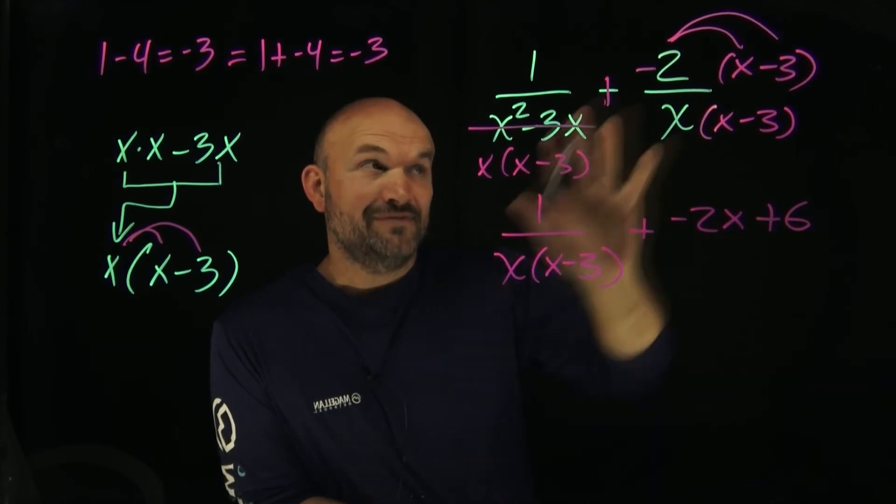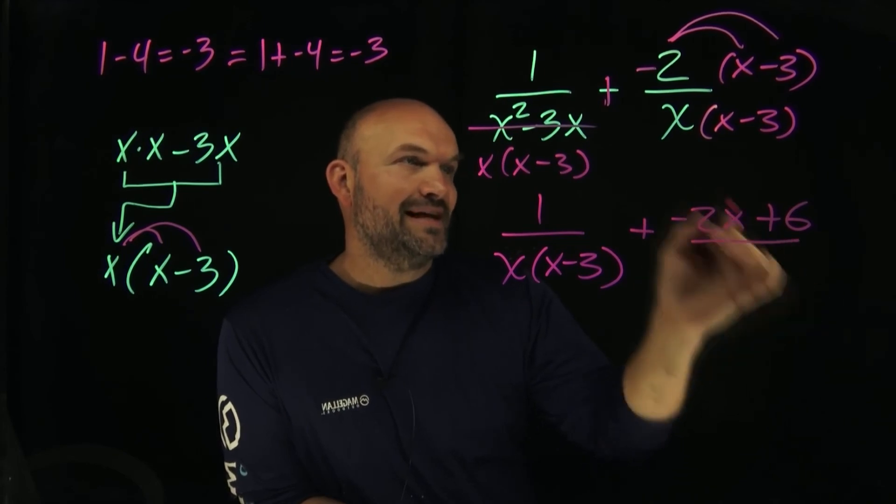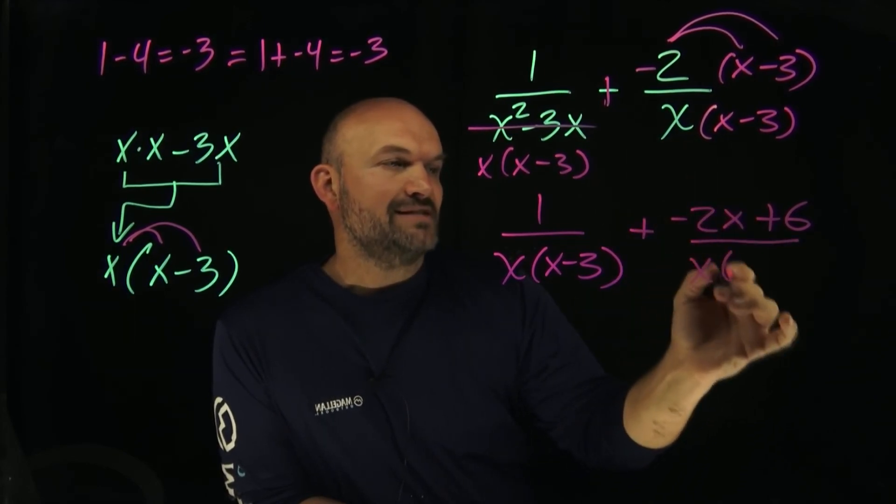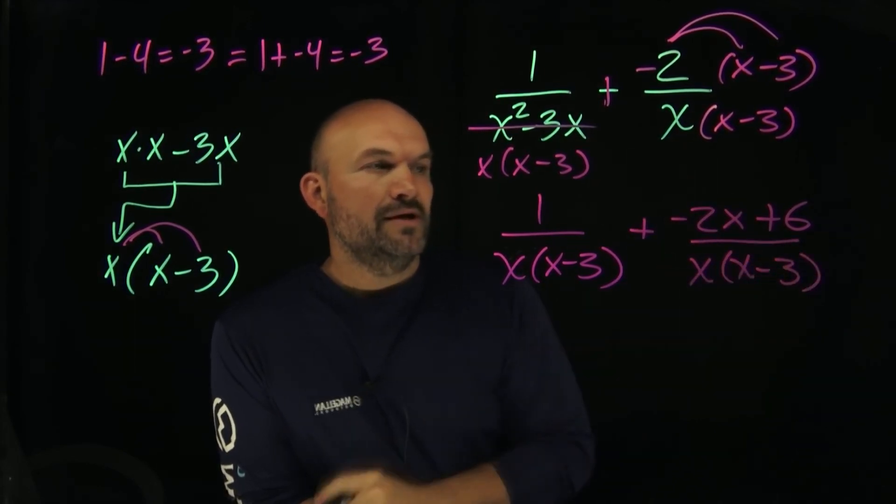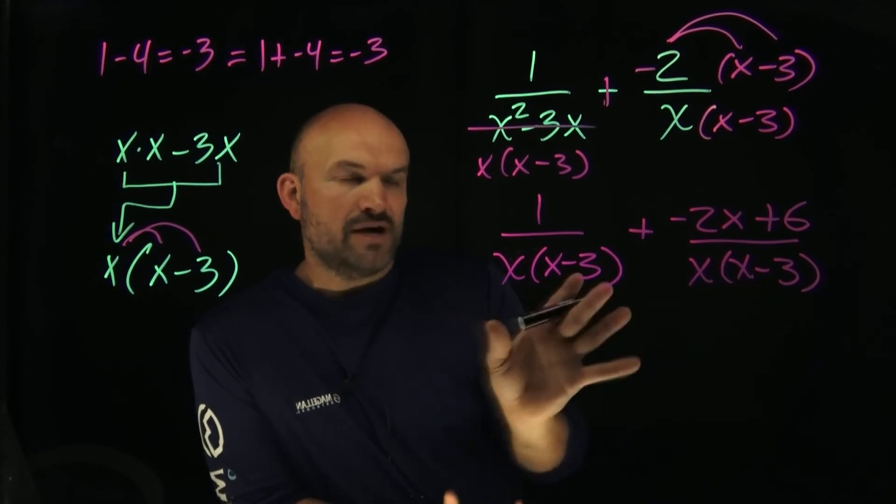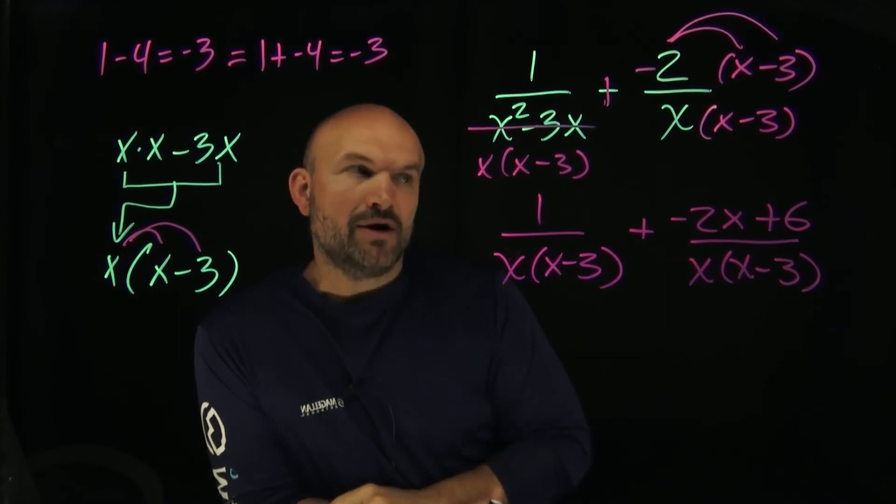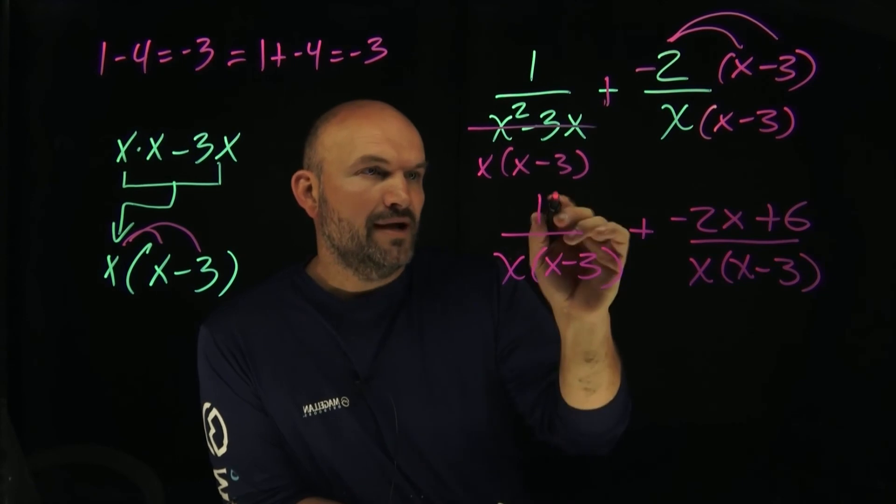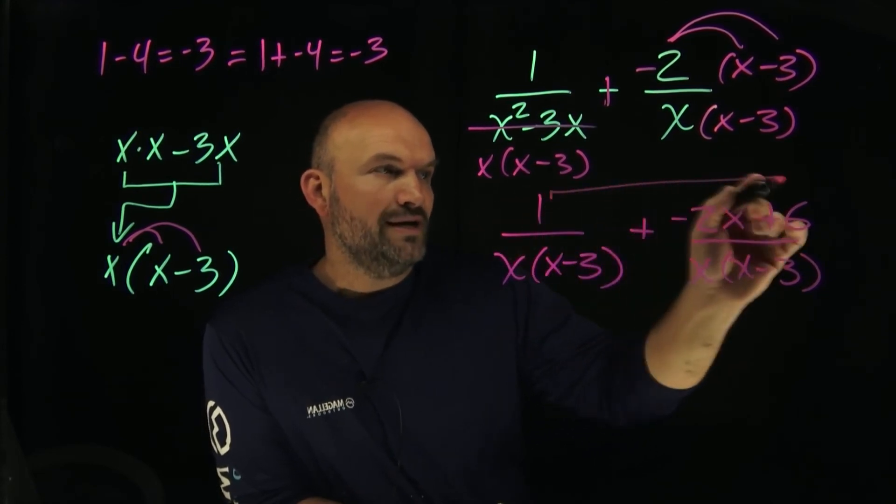You're not going to get the right answer if you don't do this correctly. That's going to be all over our common denominator of x times (x minus 3). Now we notice our denominators are exactly the same, so now all we need to do is apply our operation to our numerator. The only thing I can really combine here is the 1 and the 6.